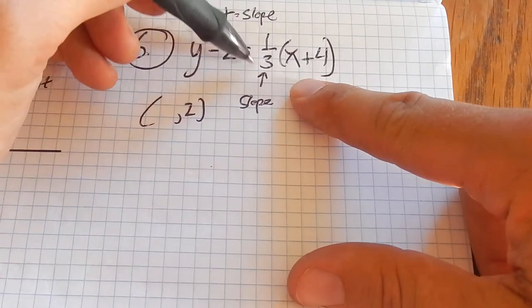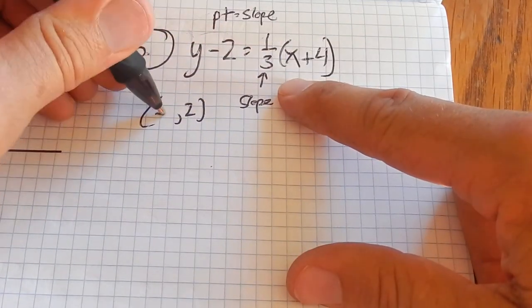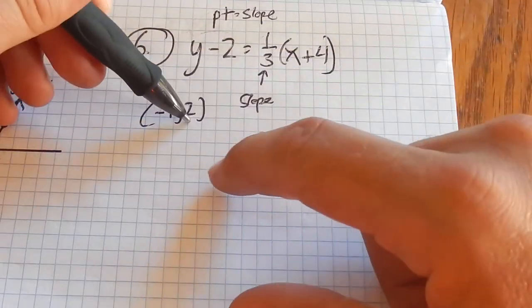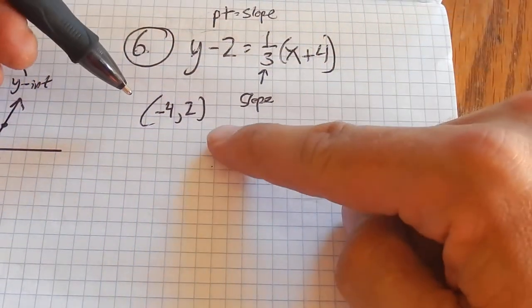What x value would make this right-hand side a 0? Negative 4. If I plug in negative 4, that makes that a 0. So I know that if I plug in negative 4, 2, 0 equals 0. This is a true equation, so it has to go through that point.